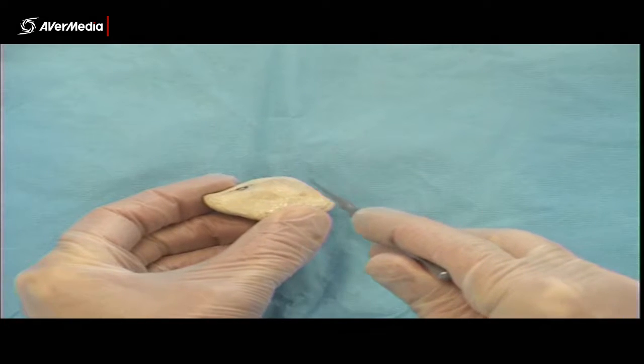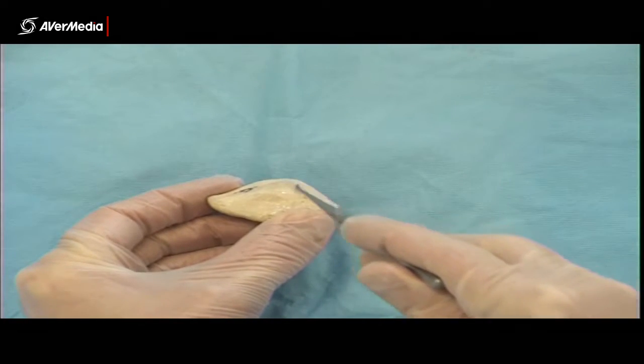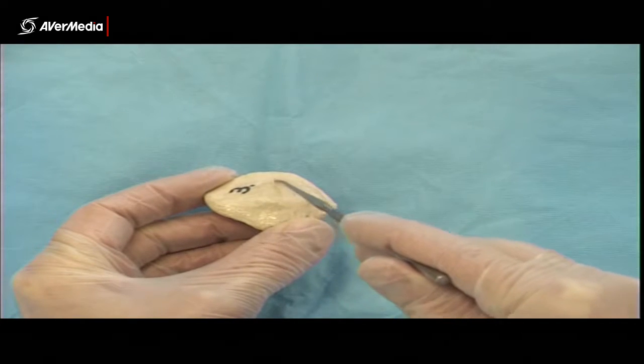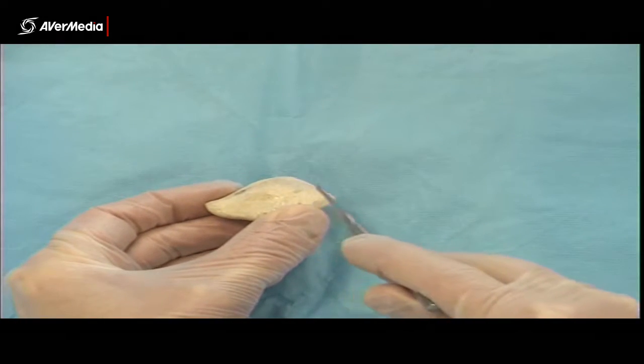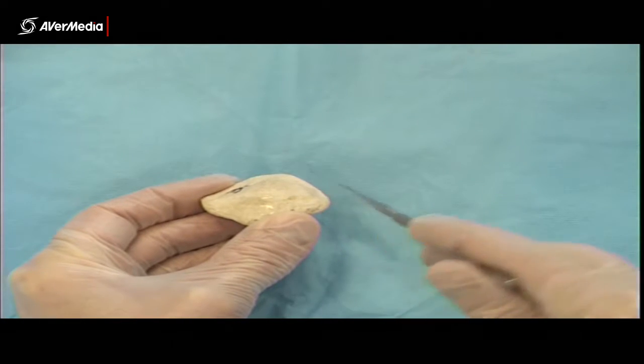So the larger facet is the lateral one and the smaller and kind of more angled facet is the medial one. And if you're in any doubt, one way you can check is if you turn the patella over so the anterior surface is facing you.